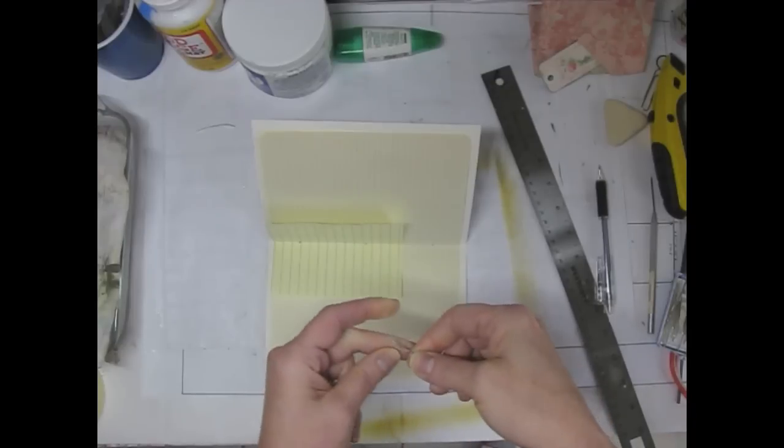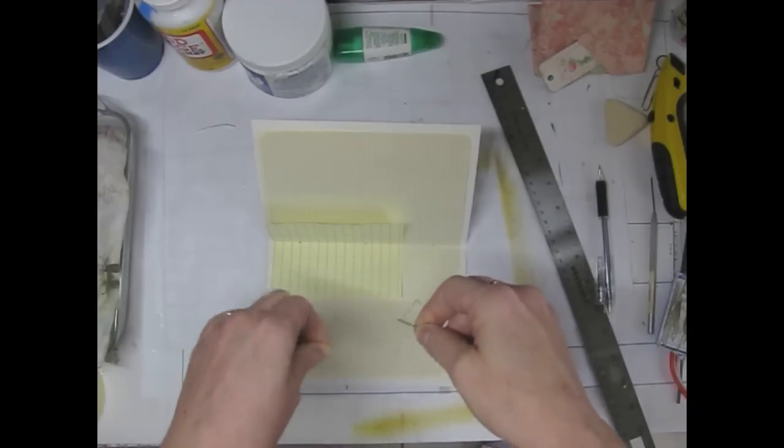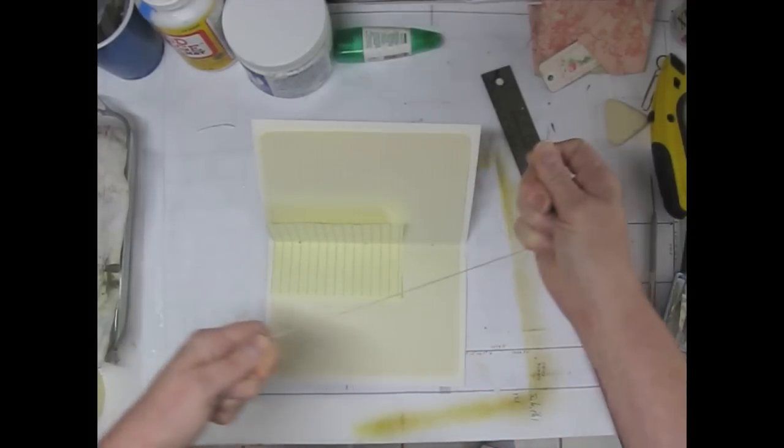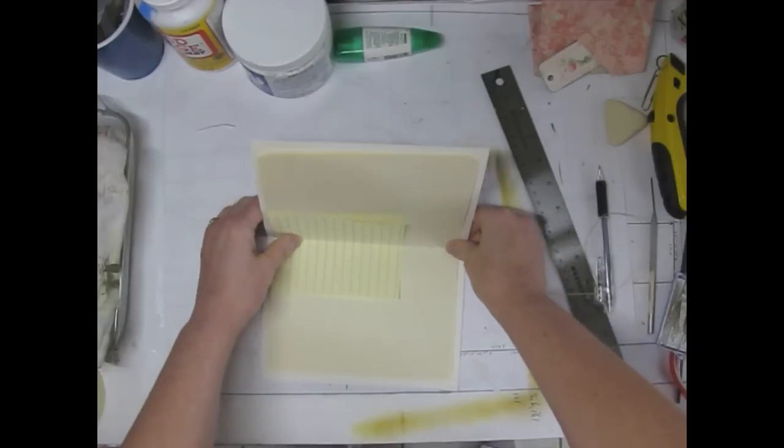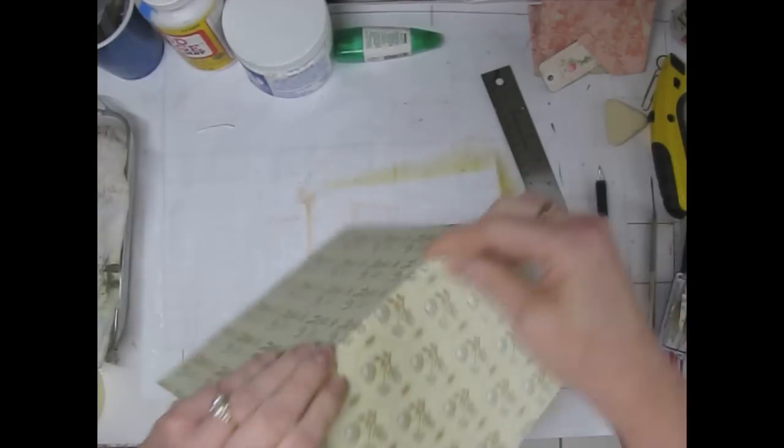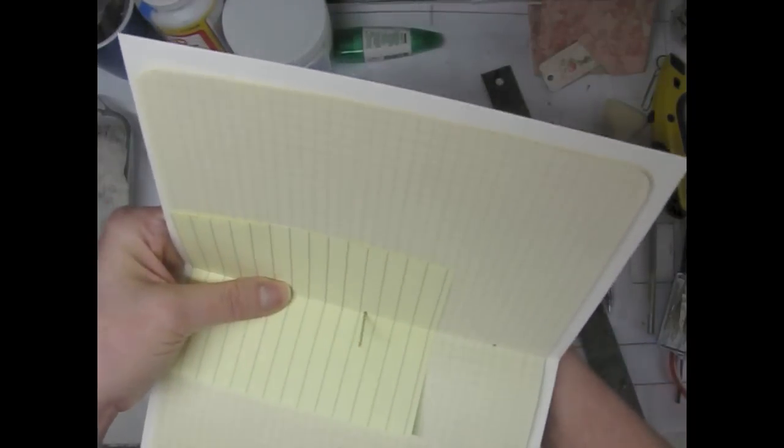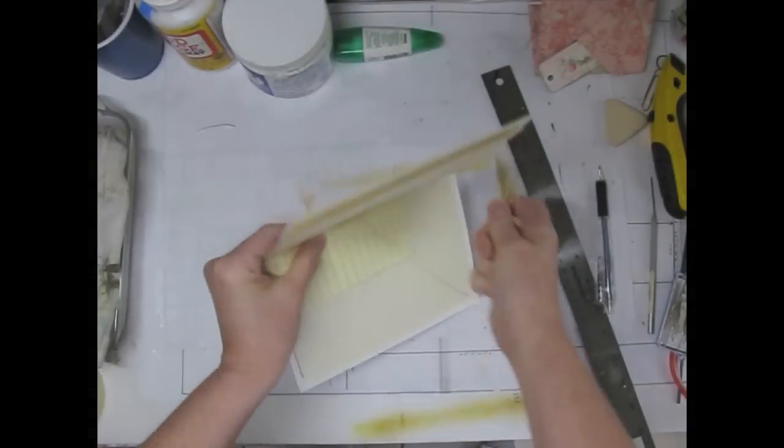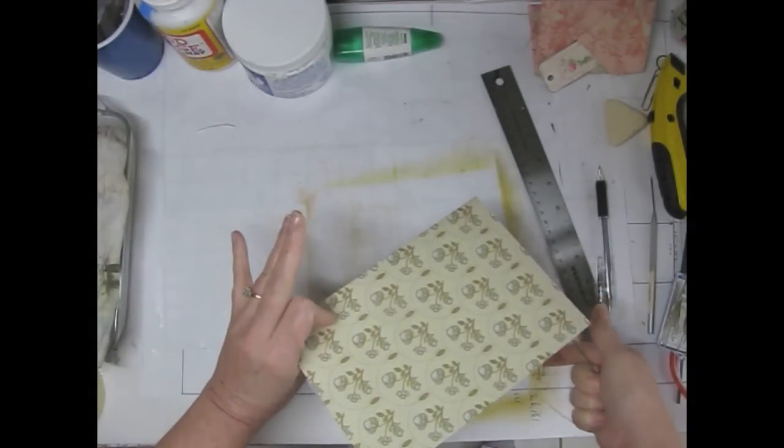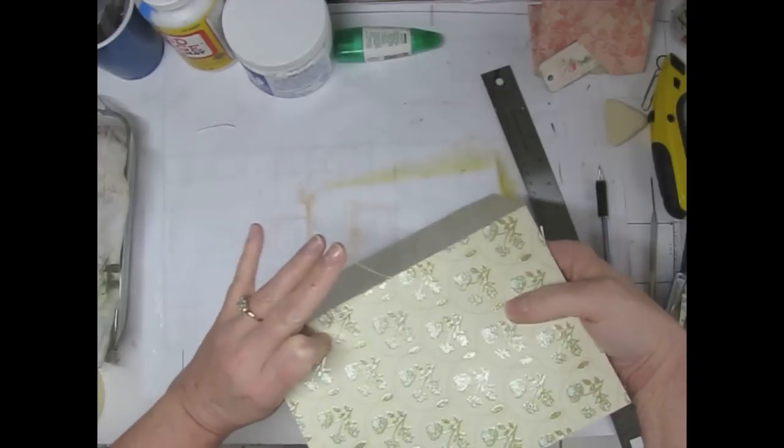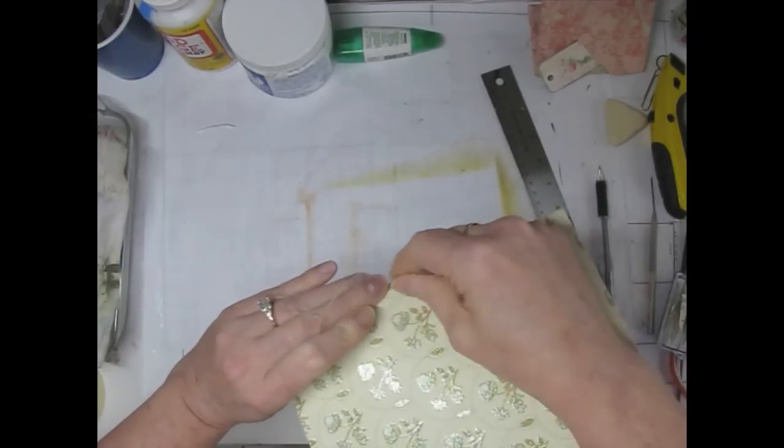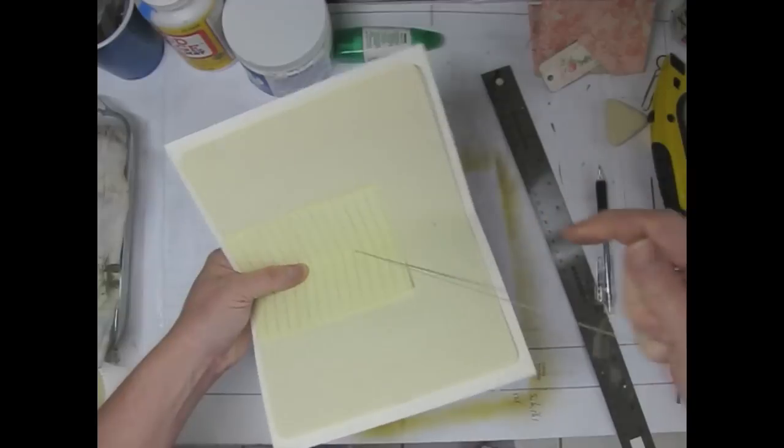You can either start by coming up through the spine or going down through the center. It doesn't matter. Just know that wherever the tail is, that's where your knot is going to be. I'm coming up through the spine because I want my knot on the spine on the outside. If I went down through the center, then my knot would be on the inside of the book. Does that make sense? Yeah, that makes sense.